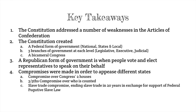What are the key takeaways from this lesson? Number one, the Constitution addressed a number of weaknesses in the Articles of Confederation. The Constitution created a federal form of government, dividing the power of government at the national, state, and local levels. It created three branches of government at each of those levels — the legislative, executive, and judicial branches — as well as a bicameral Congress based on equal representation and population. The new Constitution guaranteed a republican form of government where people vote and elect representatives to speak on their behalf.